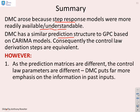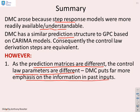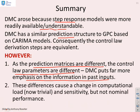However, as the prediction matrices are different, the control law parameters are different. And what you'll notice is that DMC puts far more emphasis on the information in past inputs. These differences cause a change in the computational load. Now, that's probably not considered important anymore, though it was 30 years ago. But more critically, you get a change in sensitivity.